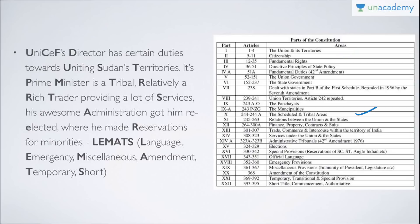Part 11 is the relationship between the Union and States. Part 12 is Finance, Property, Contracts and Suits. Part 13 is Trade, Commerce and Intercourse. Part 14 is Services under the Union and States. Part 14A is Administrative Tribunals. Part 15 is Elections. Part 16 is Special Provisions — reservation for SC/ST and Anglo-Indians. Part 17 is Official Language. Part 18 deals with Emergency Provisions. Part 19 covers Miscellaneous Provisions — immunity of President and Legislature. Part 20 is Amendment of the Constitution. Part 21 is Temporary, Transitional and Special Provisions. Part 22 is Short Title, Commencement and Authoritative.